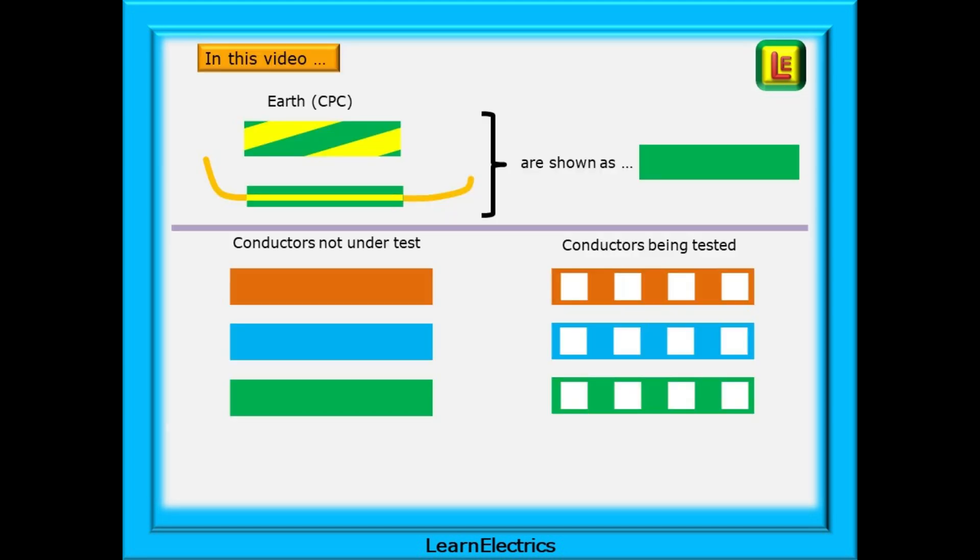In this video we'll show any earth or CPC cable as a solid green color to make it easier to display, and conductors that are not under test will be shown as a solid color, whilst those being tested will be shown as dotted with white as displayed here.